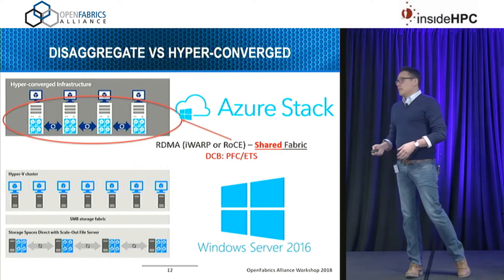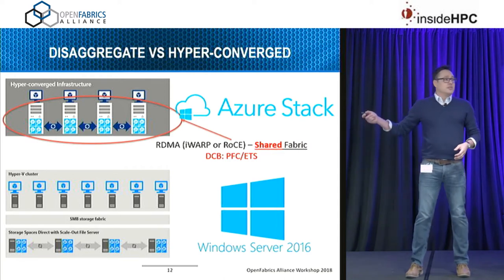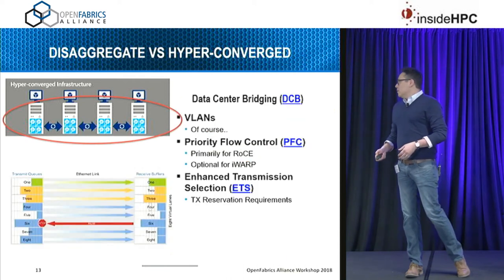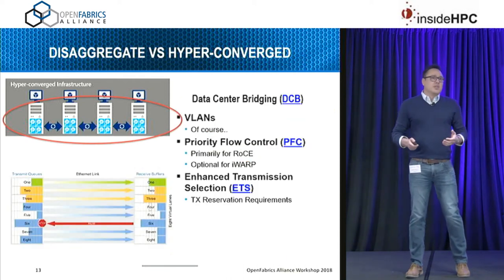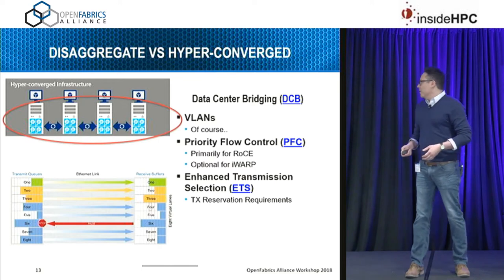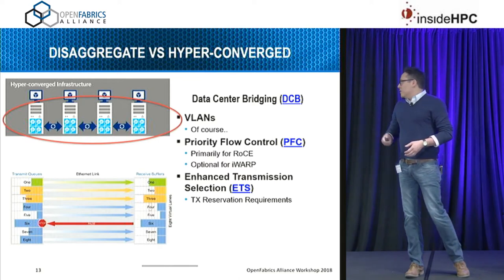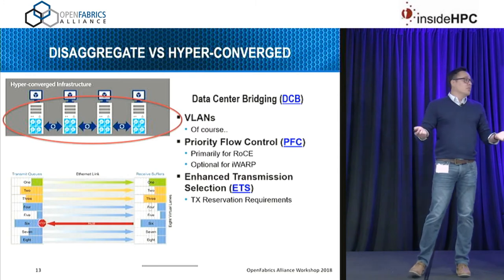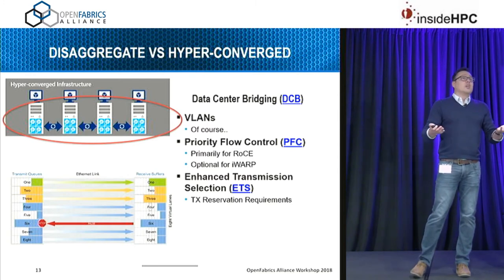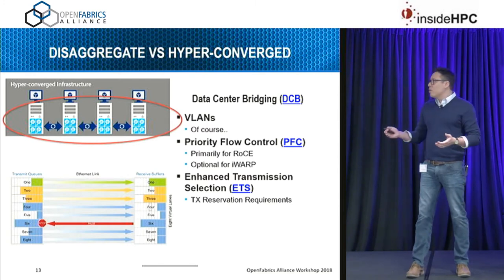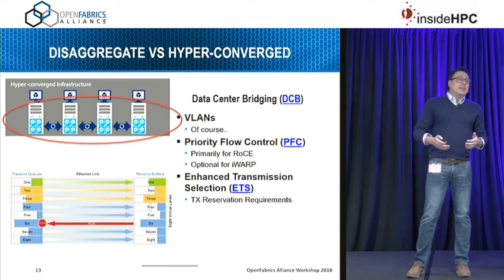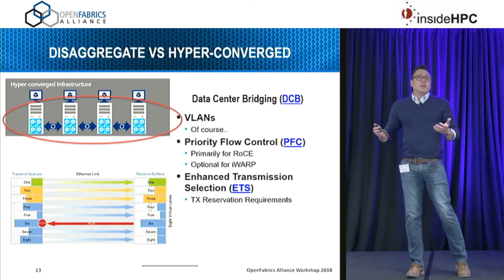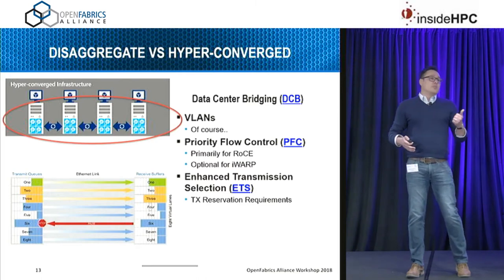You end up needing PFC and ETS from DCB. VLANs are used by everyone in private cloud. PFC is an absolute requirement to deploy RoCE — our focus is really RoCE V2. For iWarp you'll need it at some point too; if you reach a certain scale you'll have to implement some form of PFC or ETS.